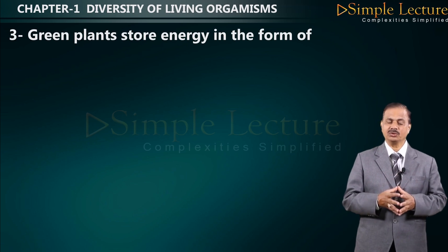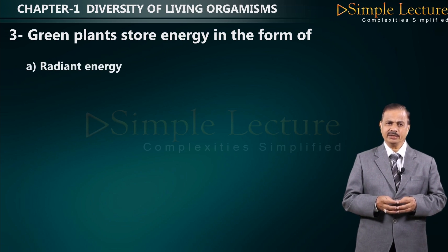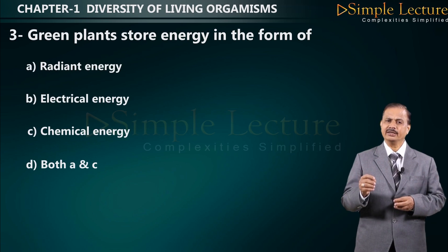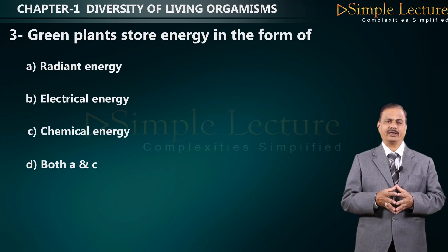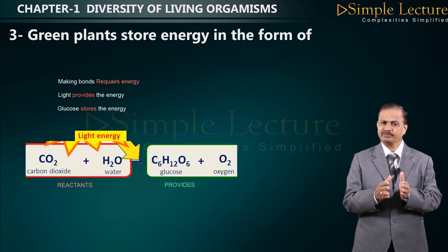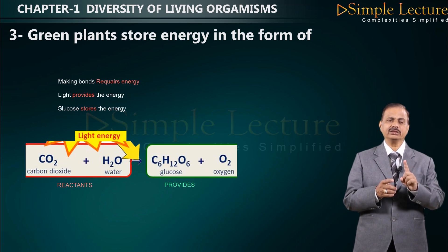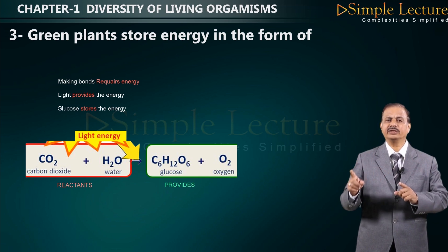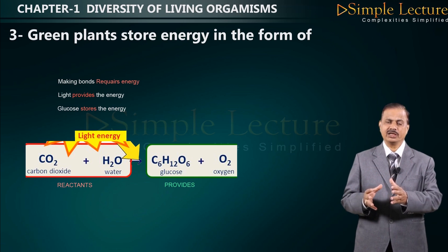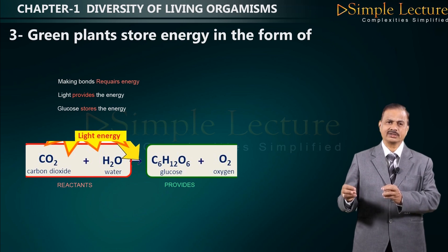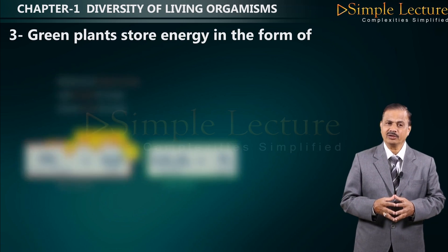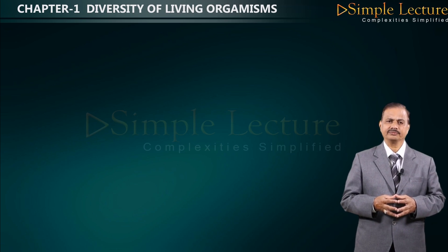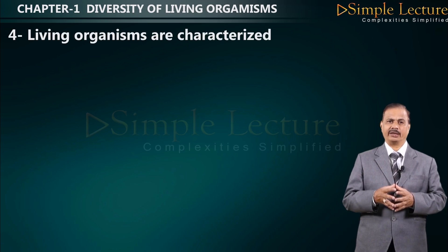Question number three: green plants store energy in what form? Options are A: radiant energy, B: electrical energy, C: chemical energy, D: both A and C. When green plants undergo photosynthesis, kinetic energy is converted into chemical energy stored as chemical substances like glucose, starch, or fructose. Therefore, the correct answer is C: chemical energy.